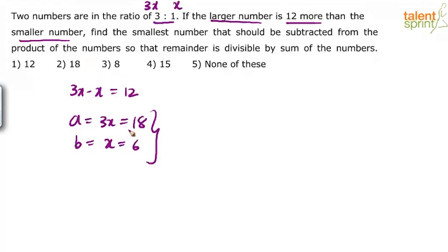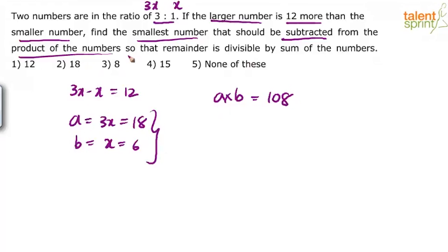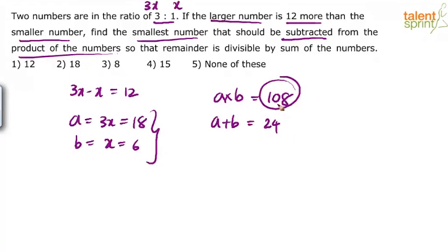Now look at the remaining part of the question. The product of the numbers is a × b = 18 × 6 = 108. The sum of the numbers is a + b = 18 + 6 = 24. So the question becomes: what should be subtracted from 108 so that whatever remains is divisible by 24?